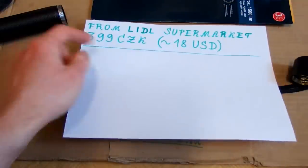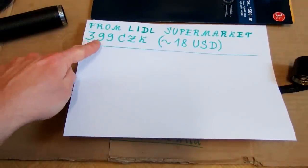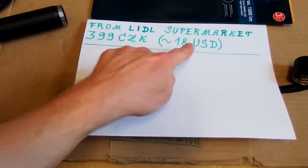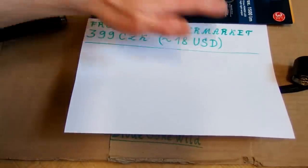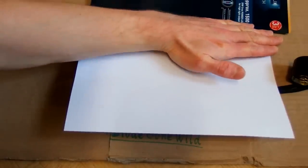It comes from a supermarket called Lidl and it was for about 400 Czech korunas which is about 18 dollars. But of course I'm not supposed to know it because I was given it for Christmas.